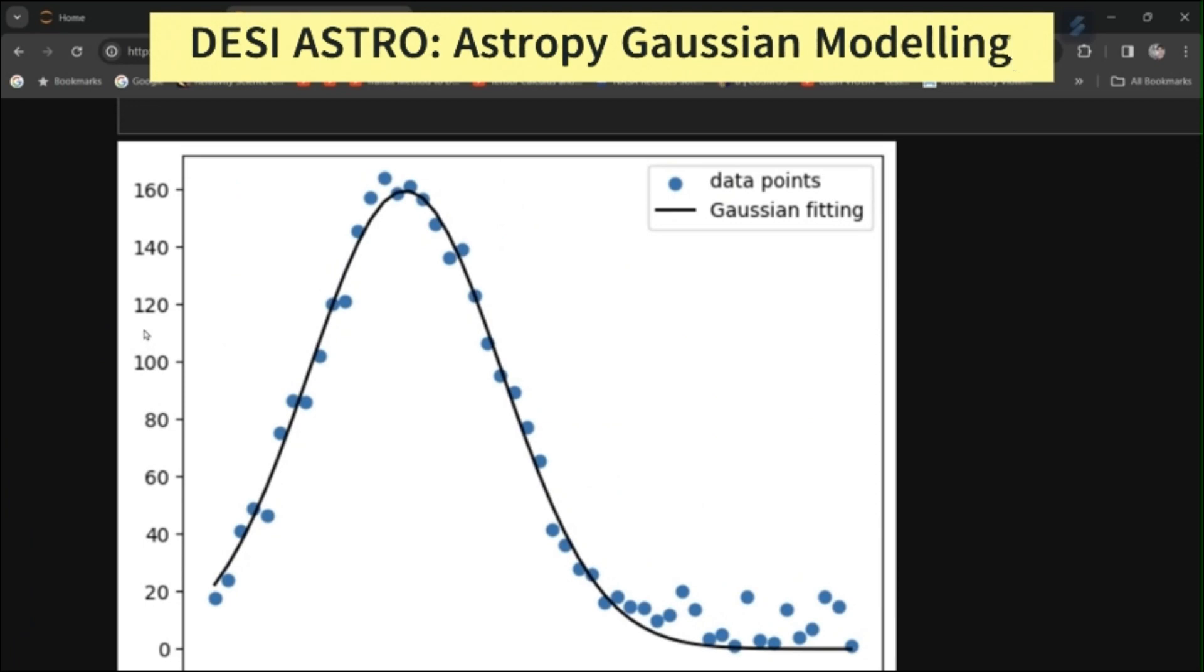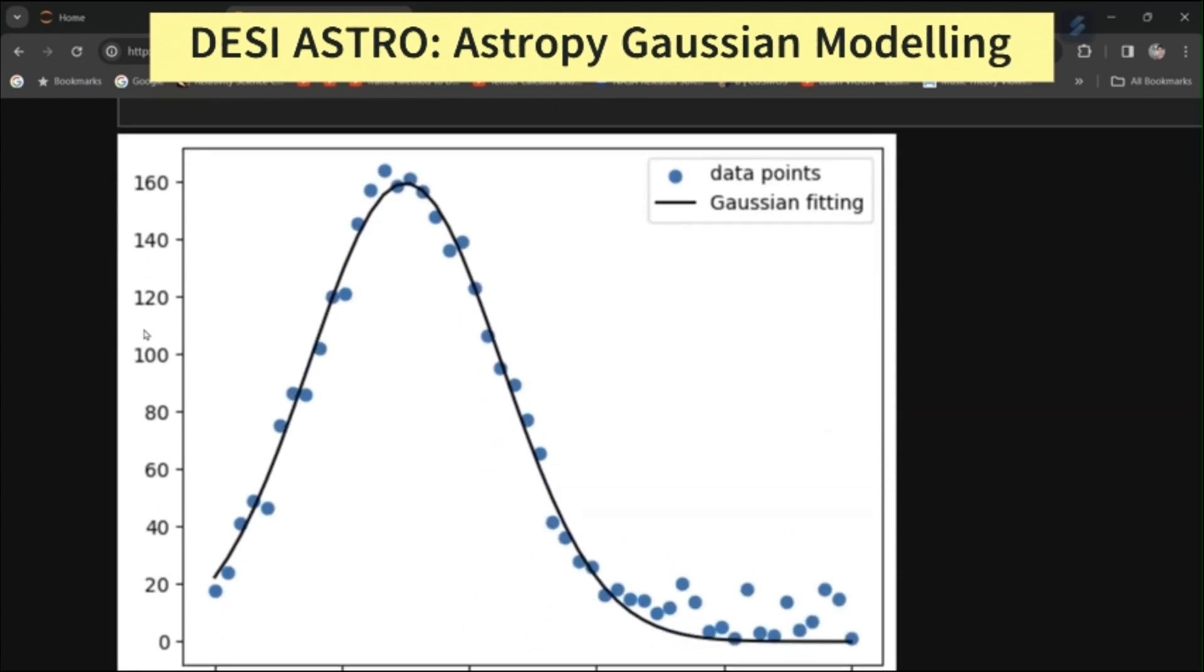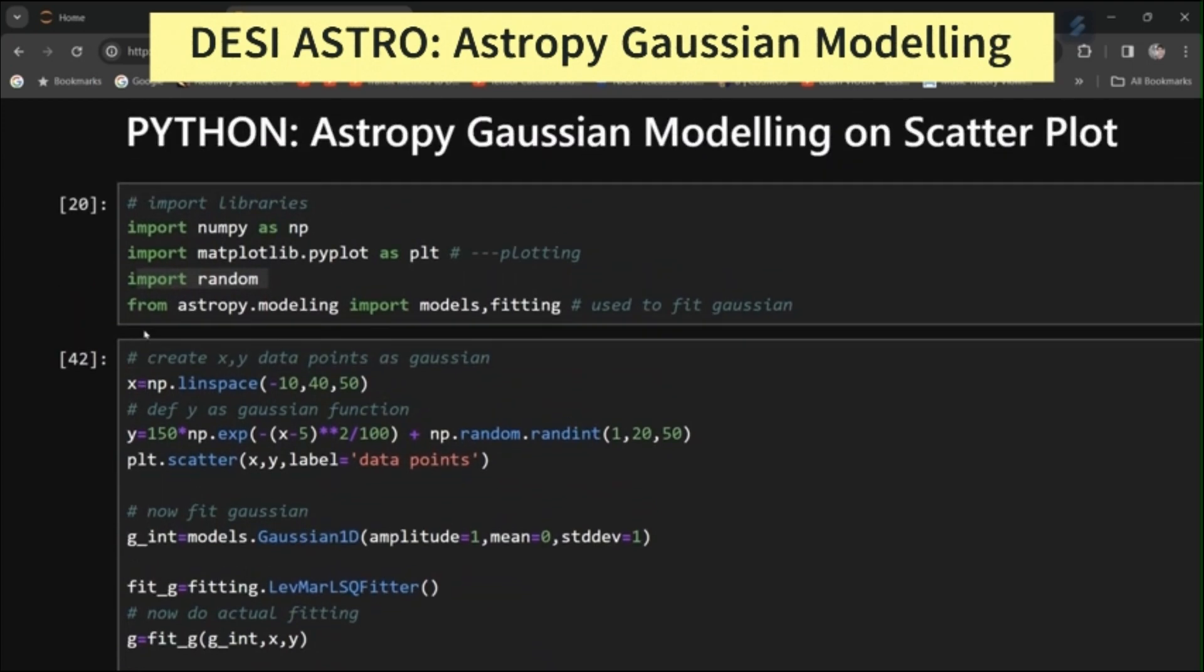So I hope in this tutorial we have learnt a very beautiful concept in data visualization that how to fit a Gaussian on a scatterplot using Astropy package in Python. So here is the code.